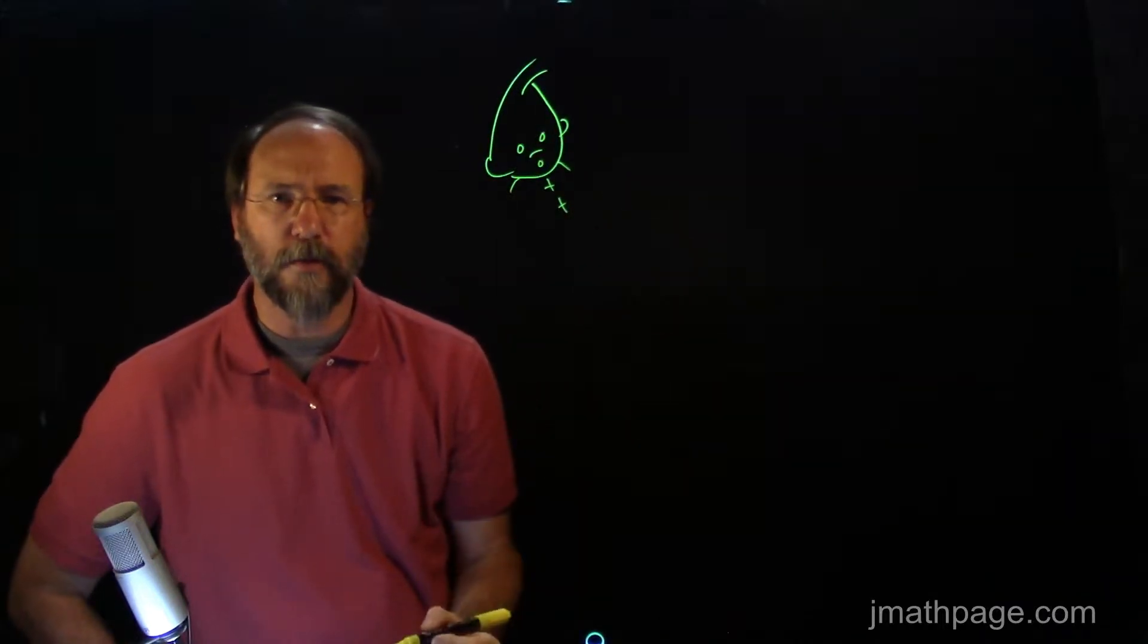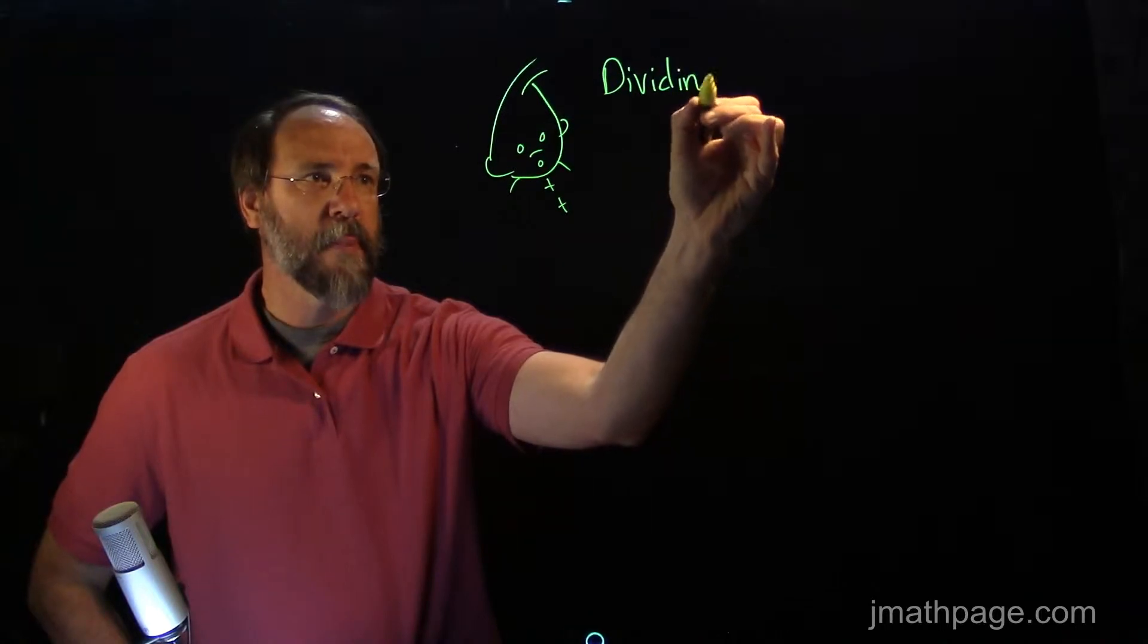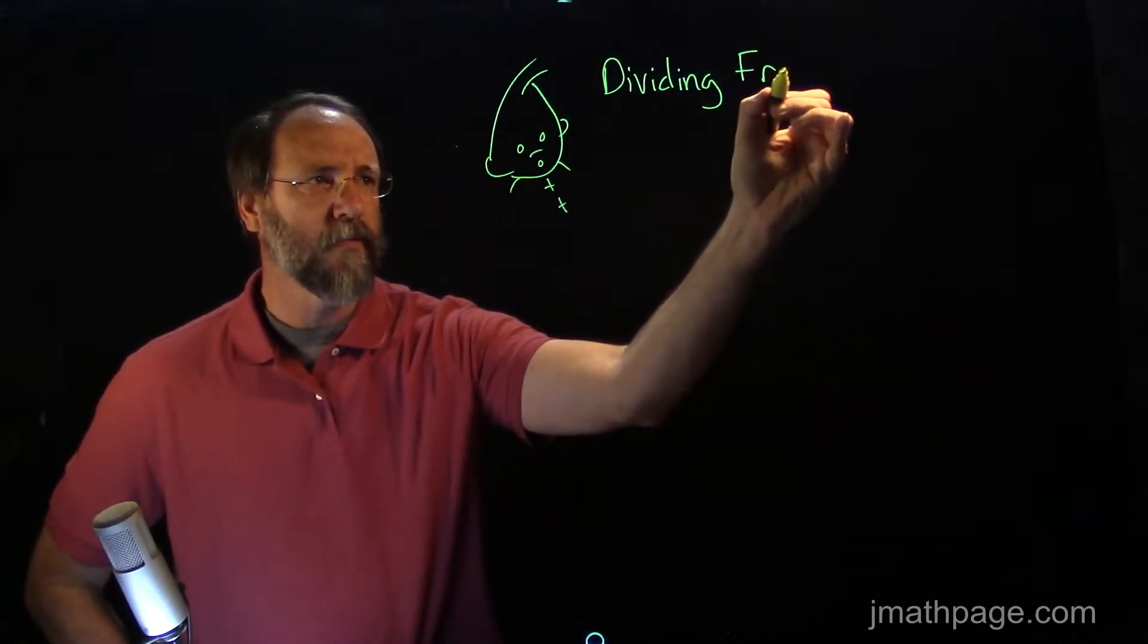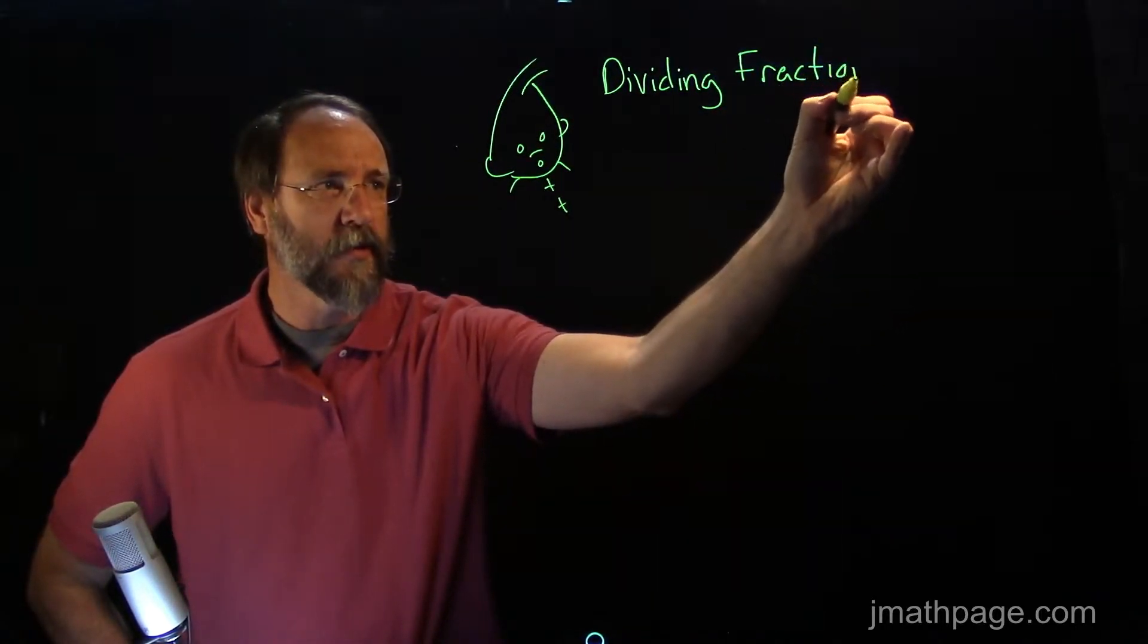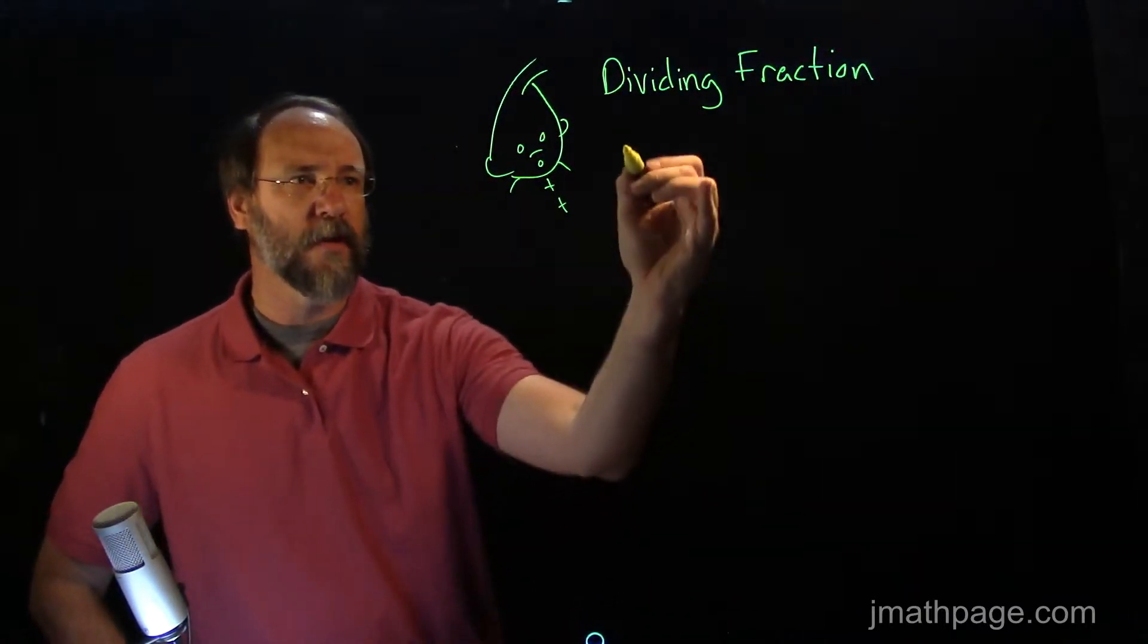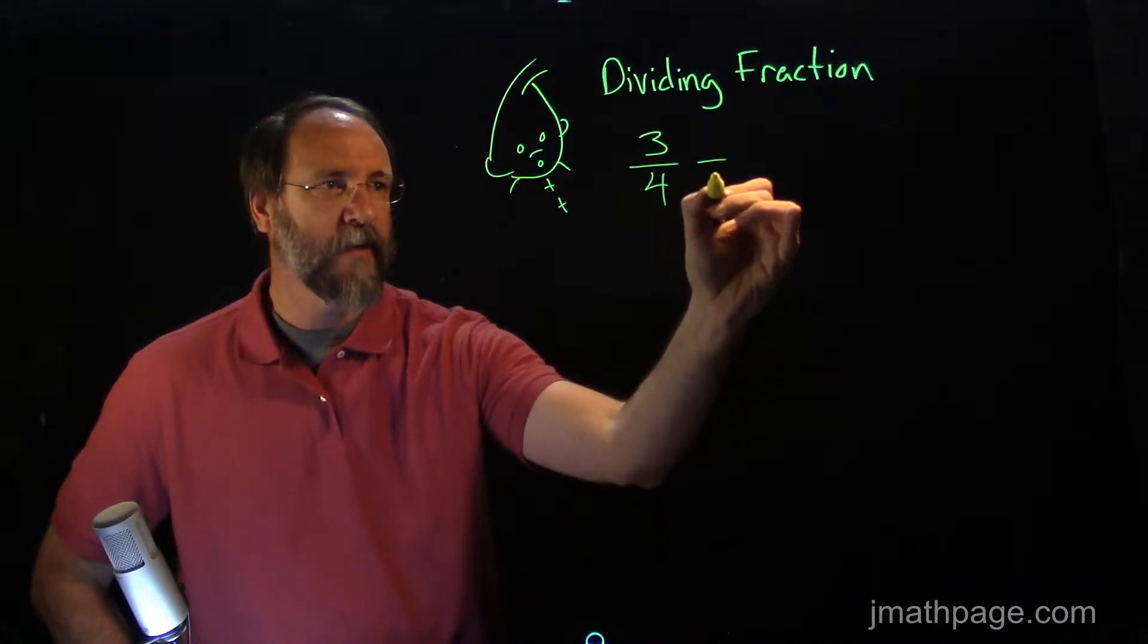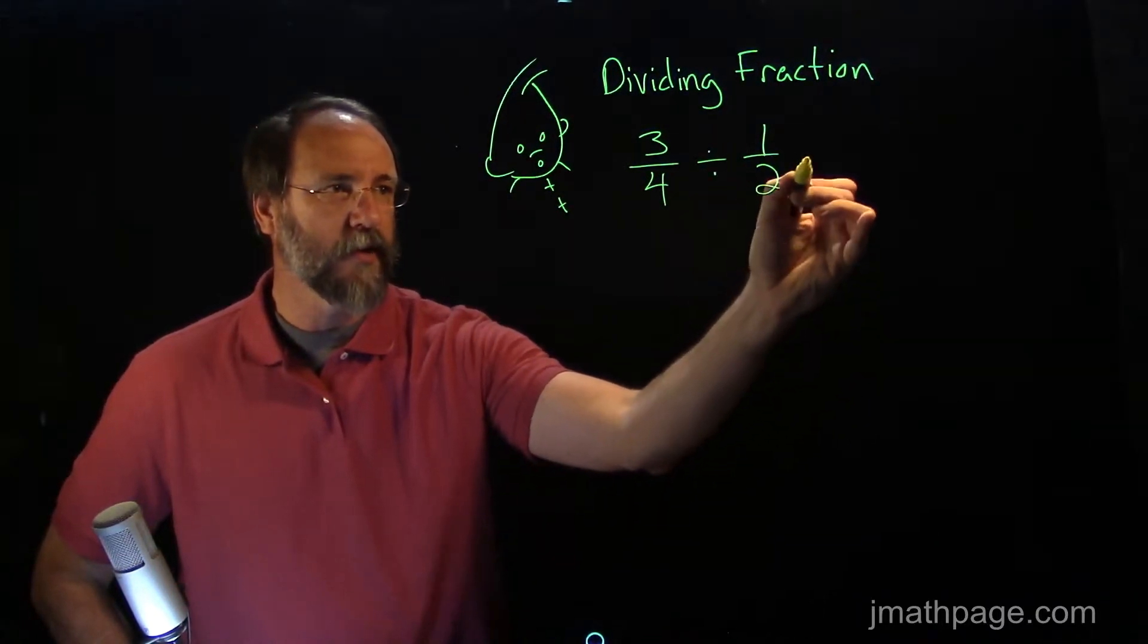The thing that Dewey's concerned about is dividing fractions. Now, dividing whole numbers is one thing, but dividing parts of things and other parts of things. Here's an example. If we had three-fourths of something, and we want to know how many halves are in it, it might look like this.